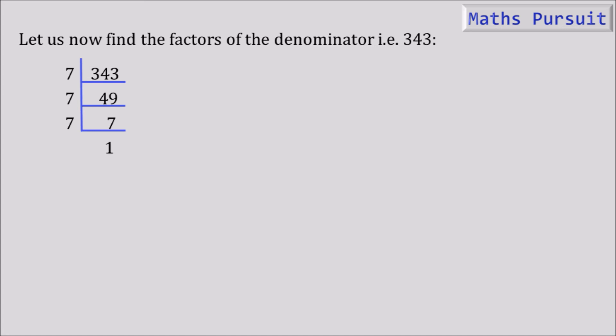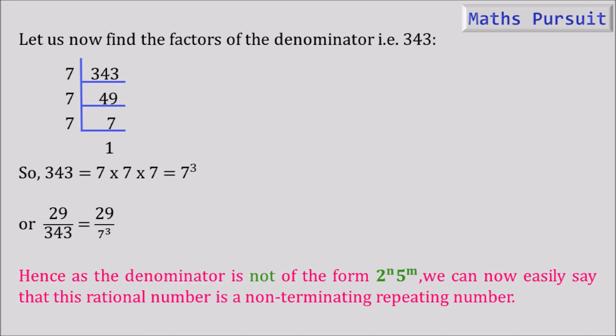Therefore, I can write 343 = 7 × 7 × 7 = 7³. Or I can say that the given rational number 29/343 = 29/7³. We could see that the denominator is not of the form 2^n × 5^m. Hence, as the denominator is not of the form 2^n × 5^m, we can now easily say that this rational number is a non-terminating repeating number. You could easily divide 29 with 343 and you can see that this will definitely not terminate; it will keep on repeating.